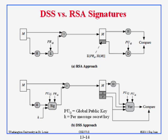The DSS approach is that you take the hash, take a per-message secret key, and then do the signature just like in El-Gamal: you have a per-message key and your private key, plus a public global key — just like in Schnorr. Everybody in the world uses that global key; then you send two numbers. At the other end, you put them into the algorithm and compare — that is basically an extension of the El-Gamal approach.